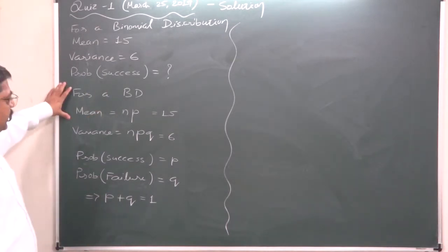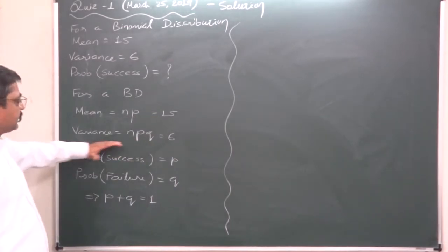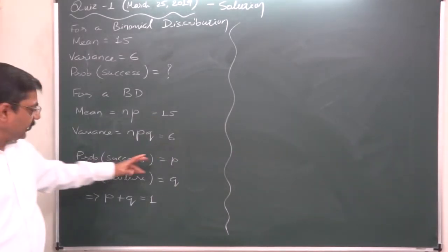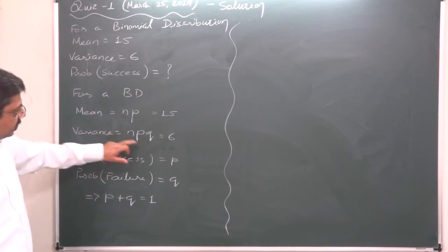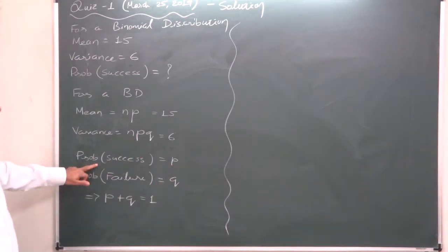Now, we are well aware that for a binomial distribution, mean is NP, that is 15 here, and variance is NPQ, that is 6 here. P stands for probability of success.